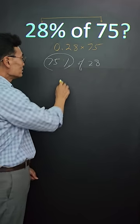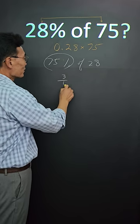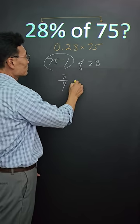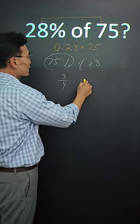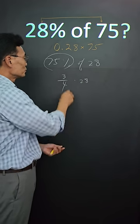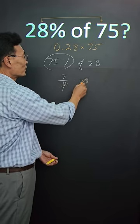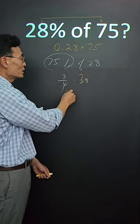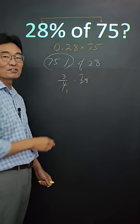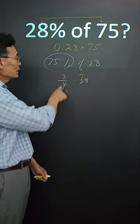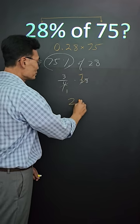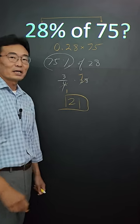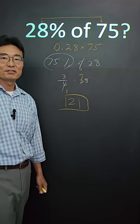75% is the same thing as 3 fourths times 28. Then we're able to reduce the 4 and the 28, where 4 becomes a 1 and 28 becomes a 7. Then 3 times 7 is going to be 21, and that's our final answer.